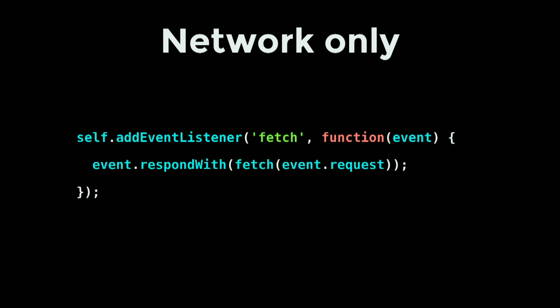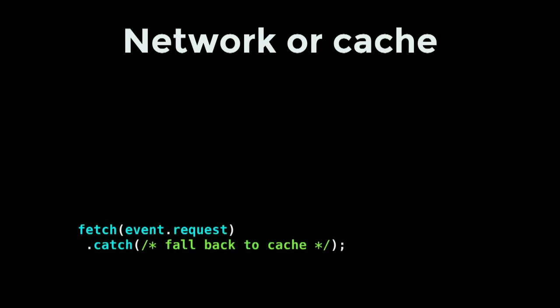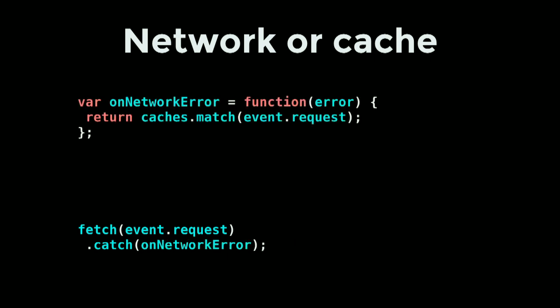Starting with a network-only strategy — this is the status quo, what a browser normally does: ask for a resource, go and fetch it, and if the fetch fails, return an error. We can improve that by falling back to the cache. In the fetch handler, we add a catch block that runs if the fetch fails, and we look in the cache. If we couldn't get it from the network or the cache, we'll have an error.